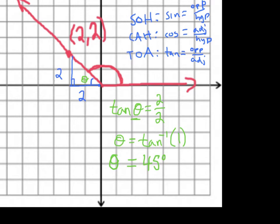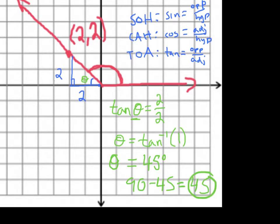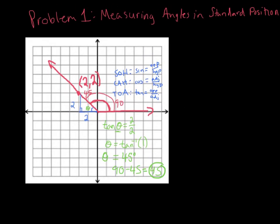That 45 degrees is the angle from the y-axis to the terminal side. We want from the positive x-axis all the way to the terminal side. We know the angle from the positive x-axis to the positive y-axis is 90 degrees. So 90 plus 45 gives us 135 degrees as the measure of that angle.